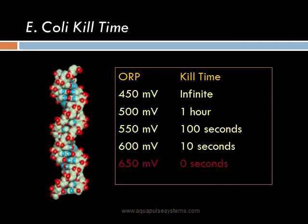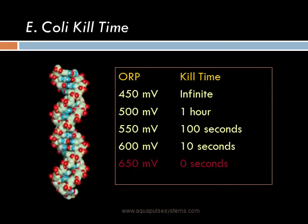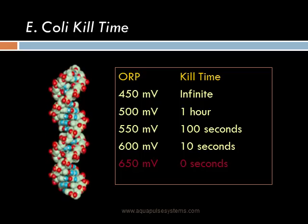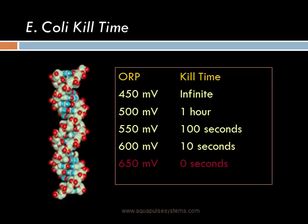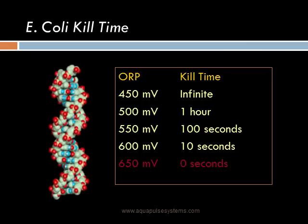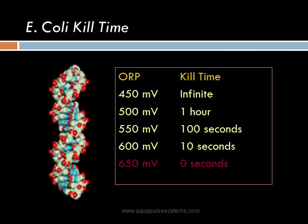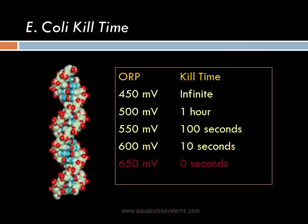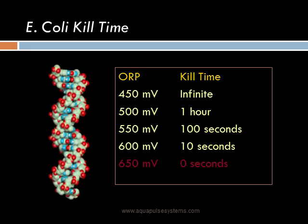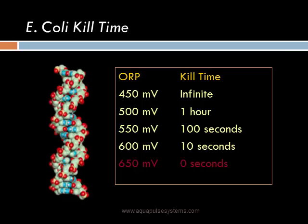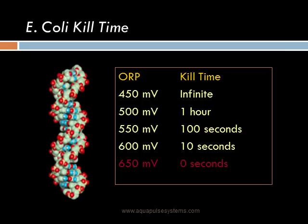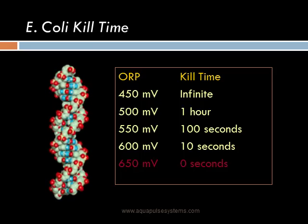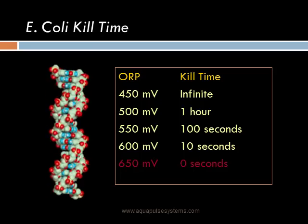There is a tug of war for these electrons between the oxidizer and the cell. In this example of E. coli, at an ORP of 450 millivolts, it will take a long time before it is killed. At 500 millivolts, it takes an hour of contact time. At 550 millivolts, it takes almost 2 minutes. At 600 millivolts, it is 10 seconds. And at 650 millivolts, it's an instant, on-contact kill.